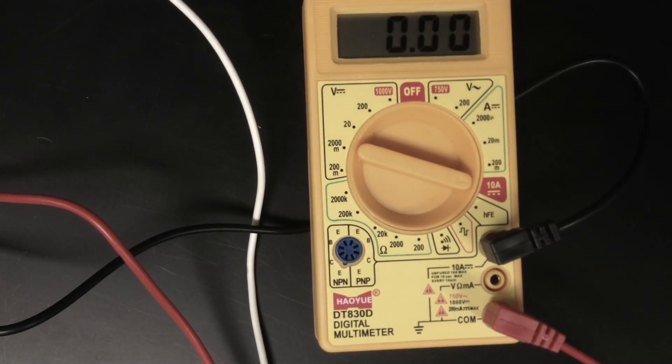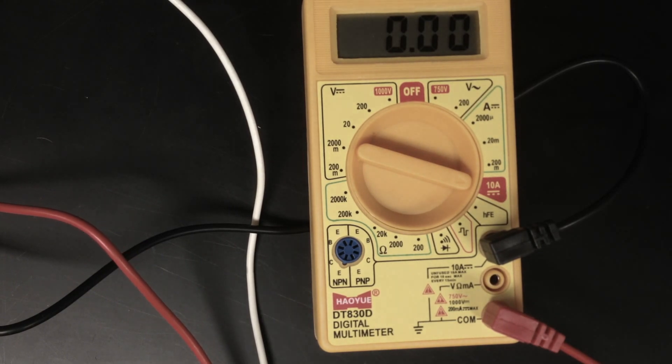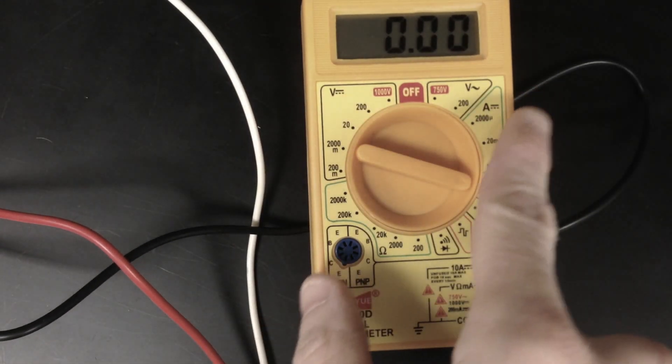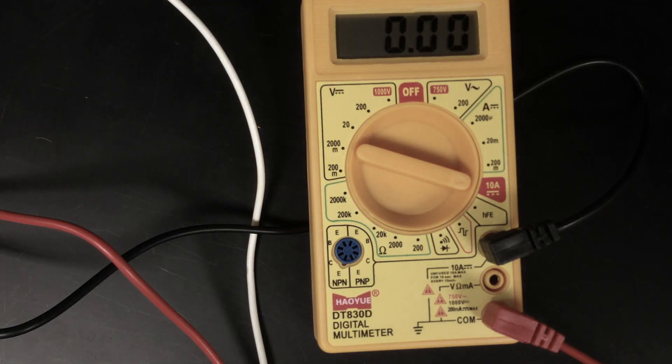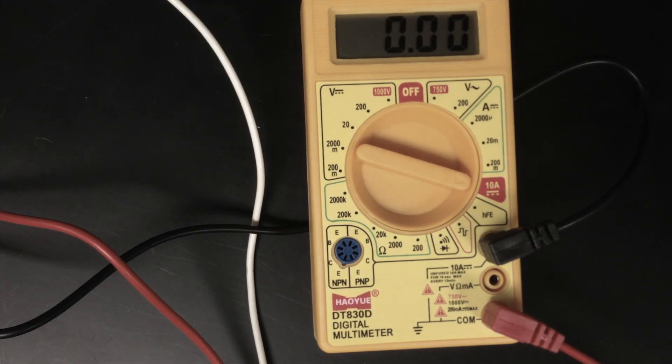Hey guys, this video is on how to measure current with a multimeter. So instead of being on the V side, you've got to be on the A side of the multimeter. That means amps, which is the unit for current.